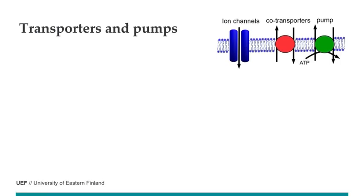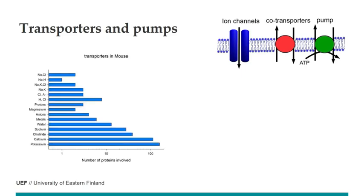What kinds of ion transporters and pumps do we have? In the previous video I described the channels, and now we also have co-transporters, exchangers, and pumps that directly use ATP. Looking at databases, these are all the ion transporters found in mouse. There are some that transport more than one ion — sodium and chloride together, sodium and potassium, proton, sodium-potassium-chloride, and anions — so we have co-transporters that typically use the sodium or chloride gradient.